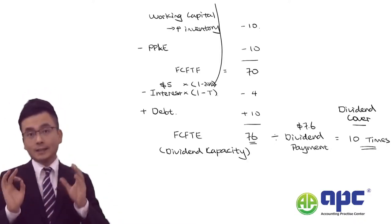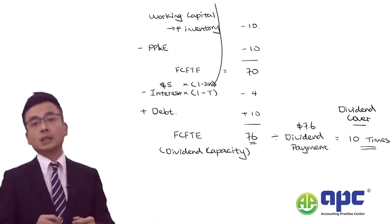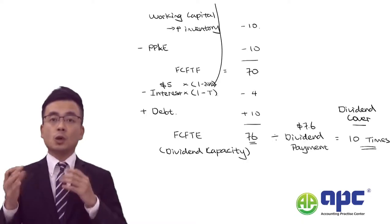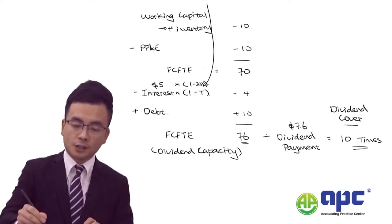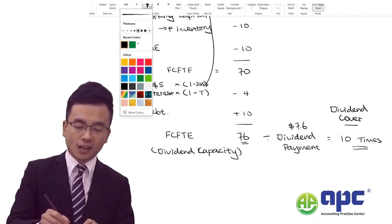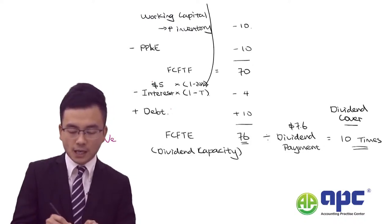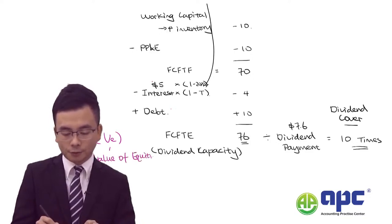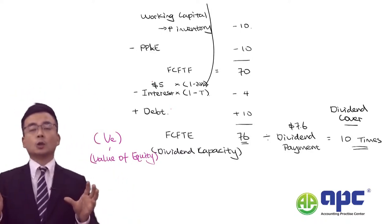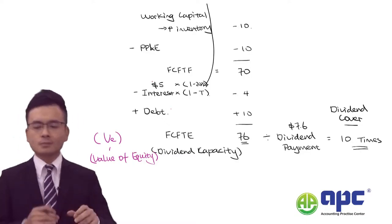In the exam, if you are also required to calculate the weighted average cost of capital, you will need to determine the value of equity. The free cash flow to equity of $76 is sometimes also known as VE — the value of equity — so make sure you are aware that the FCFE can also represent the value of equity.